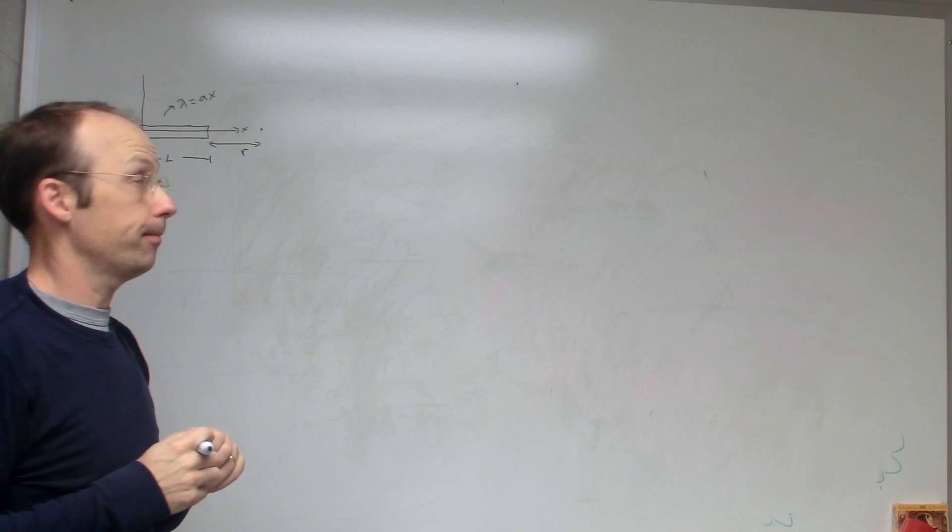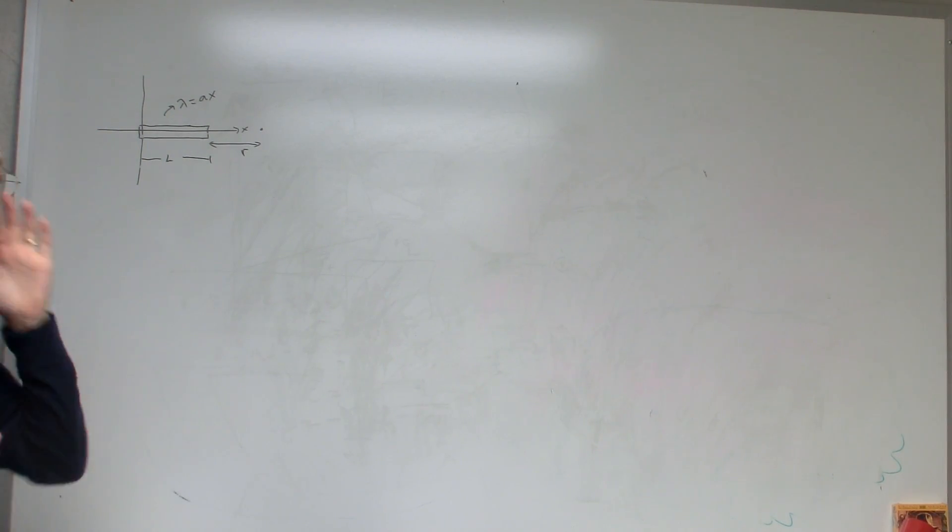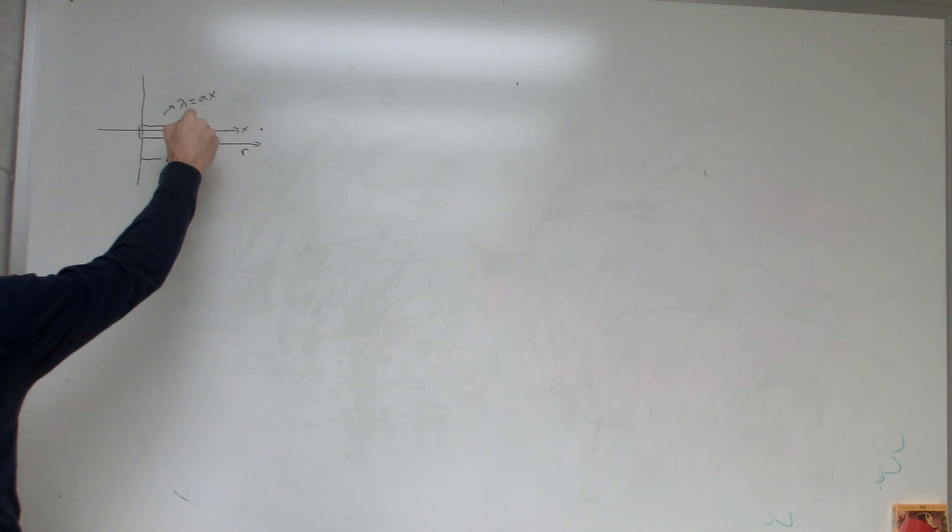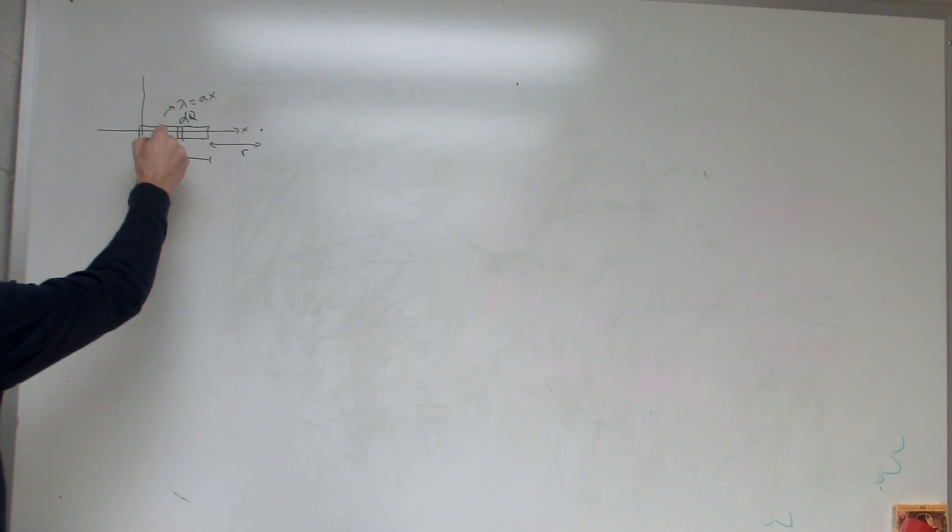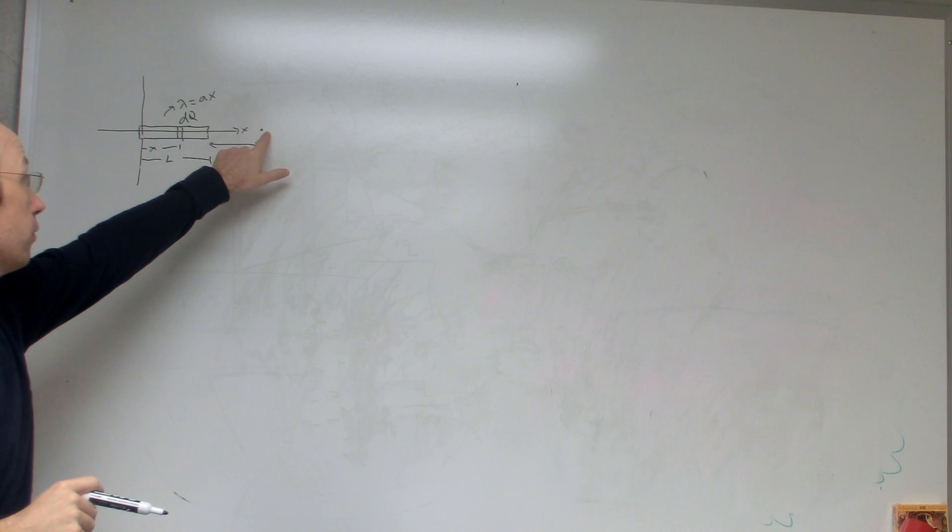We'll still use the same method for finding electric field, but it's a little bit different. So the first thing that we do is say, okay, I'm going to break this into a little piece dq, and I can give the location of that as x just because that will be useful later.